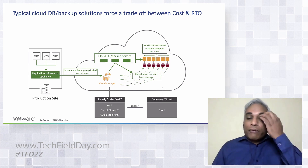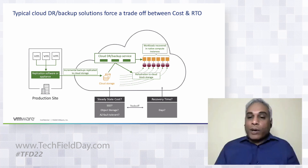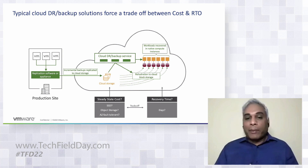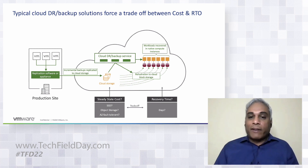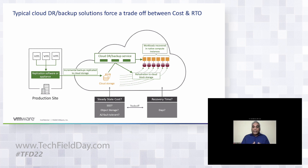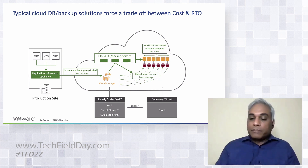There are other issues too — converting VMs and how to fail back from cloud formats to VMware format, and whether it's a cohesive SaaS service. But I'll focus on these two things: what is steady-state cost, and how do you address RTO together as one combination?